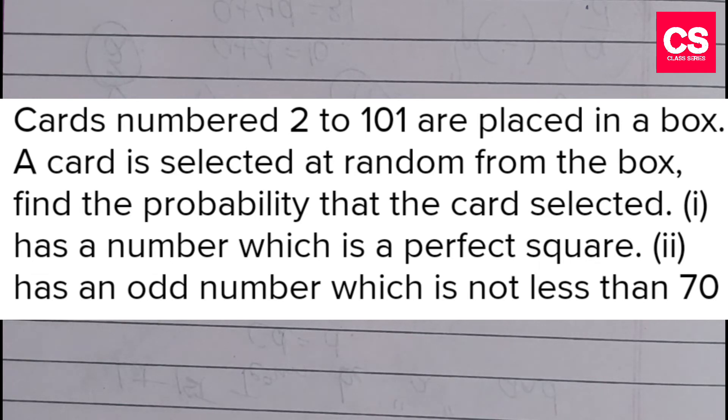A card is selected at random from the box. Randomly, a card is picked from the box. Then we find the probability that the card selected has a number which is a perfect square.